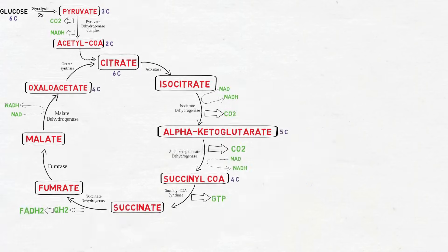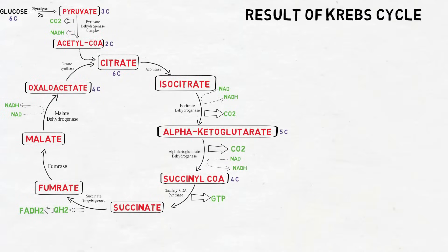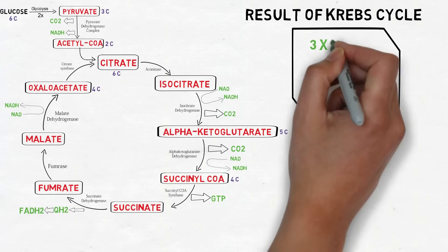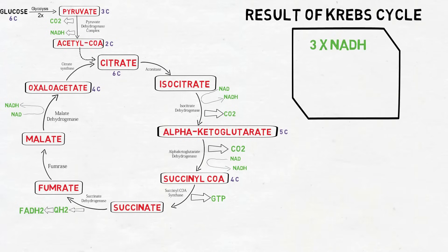Now let's look at the results of the Krebs cycle. Through each cycle of the Krebs cycle, following products are generated: three molecules of NADH, one molecule of FADH2,